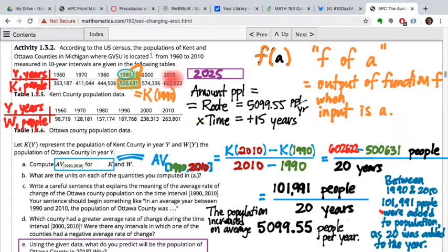The only information we have is the number we just computed, 5099.55 people per year. So the amount of people by which the population is expected to change over those 15 years is just the rate times the time. If you multiplied these two numbers out, what did you get?